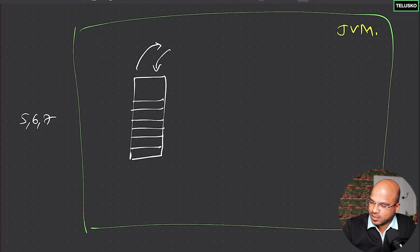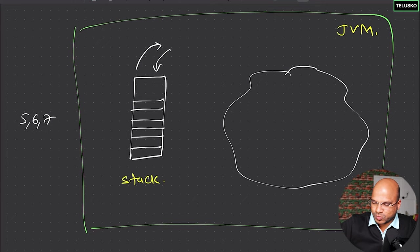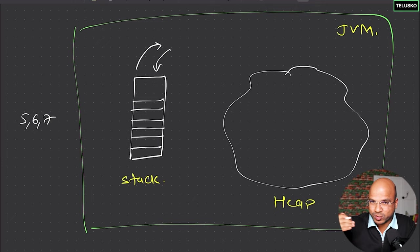Apart from stack memory, you have one more called heap. I'm drawing it as an expanding shape to represent that it expands. So this memory is your heap. We have a stack and a heap memory — in the stack you store data in a sequential order, and in the heap you have an open space.